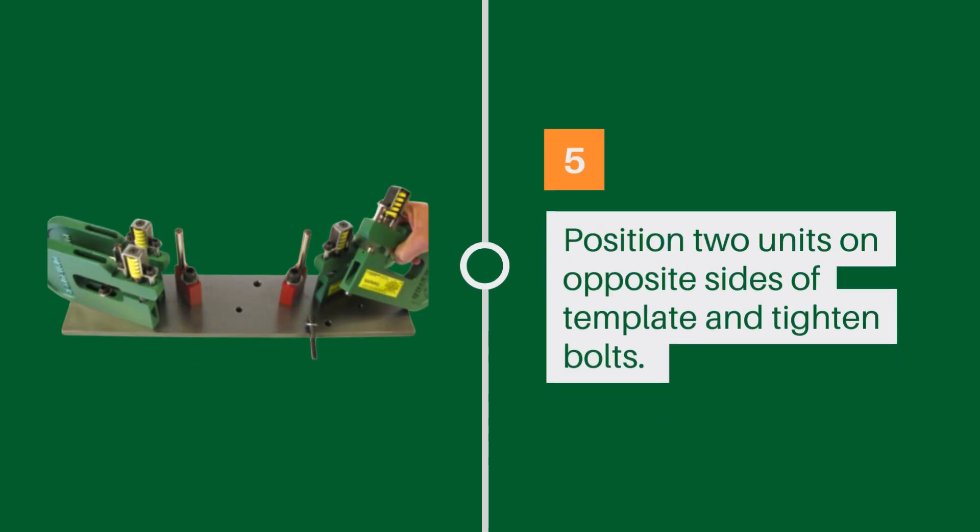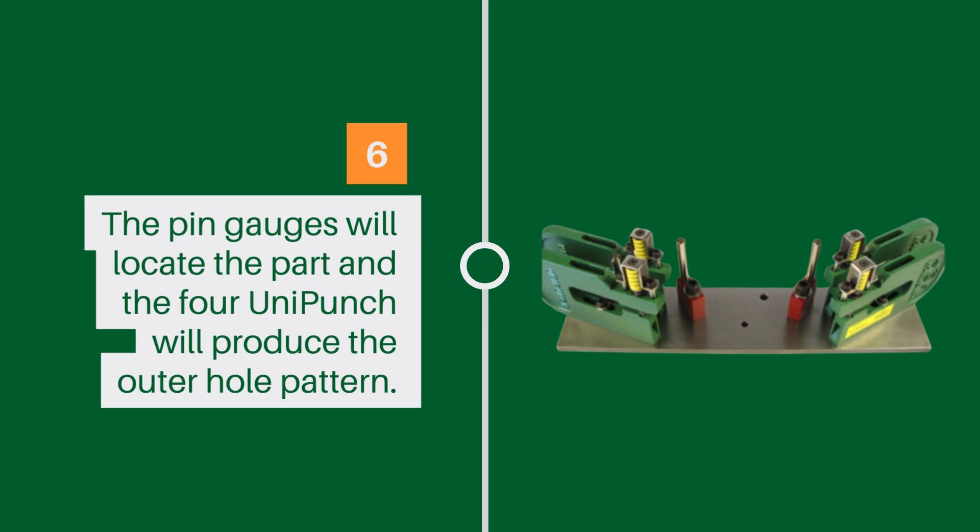Position two units on the opposite sides of the template and tighten bolts. The pin gauges will locate the part and the four UniPunch will produce the outer hole pattern.